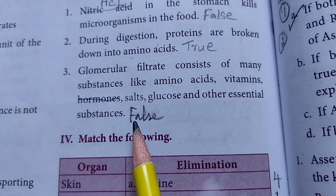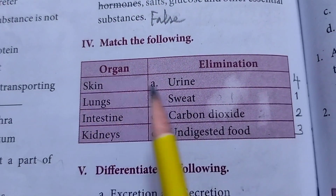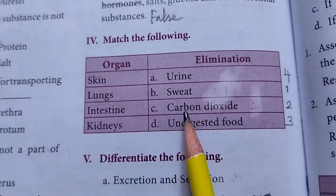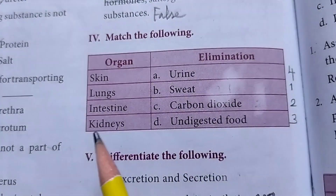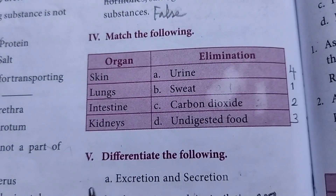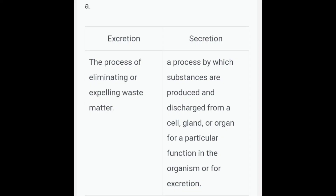The hormones statement is true. Match the following: Skin - Lungs - Carbon dioxide; Intestine - Digested food; Kidney - Excretion. Definitions: Excretion is the process of eliminating or expelling waste matter. Secretion is a process by which substances are produced and discharged from a cell, gland or organ for a particular function in the organism.